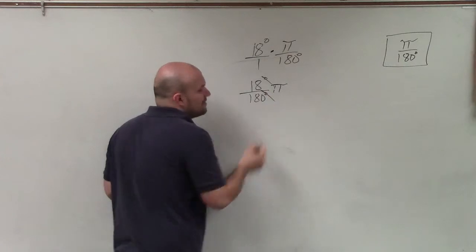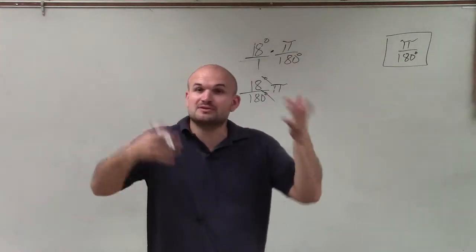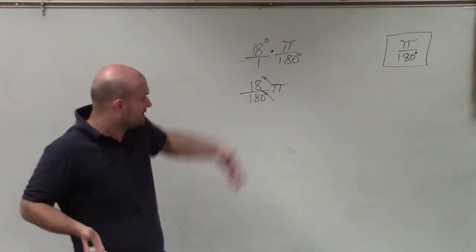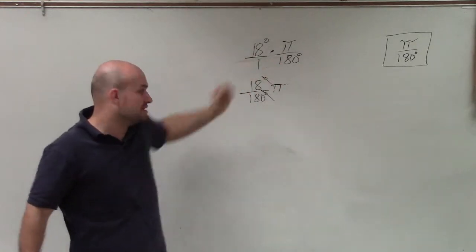Well, a degree divided by a degree is just like for units, just like for numbers, it's going to go to 1. So therefore, we're not dealing with degrees, and that's why I can see that my answer is going to be in radians.